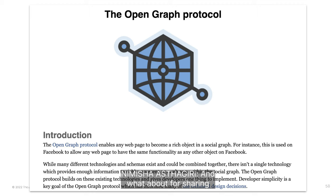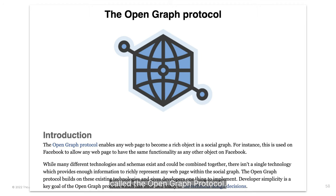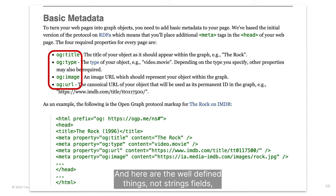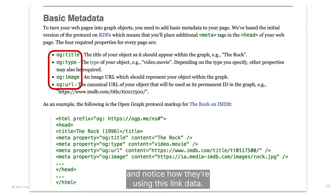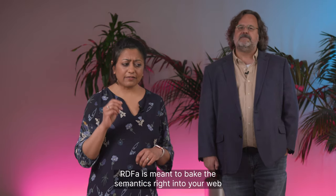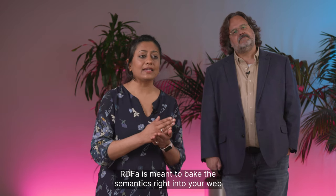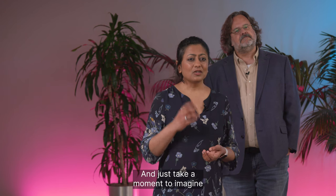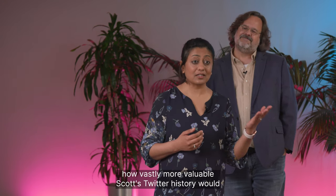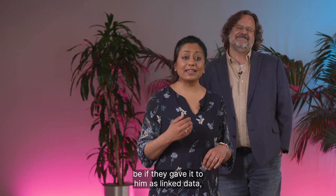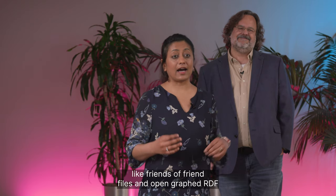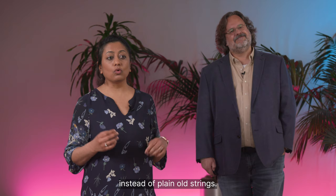What about sharing out your tweets? Facebook created a linked data schema called the Open Graph Protocol. Here are the well-defined 'things, not strings' fields: the Open Graph title, type, image, and URL. Notice how they're using this linked data — this is an example of RDFa, or RDF in HTML attributes. RDFa is meant to bake the semantics right into your web page. Just take a moment to imagine how vastly more valuable Scott's Twitter history would be if they gave it to him as linked data — like Friend of a Friend files and Open Graph RDF instead of plain old strings.